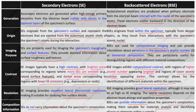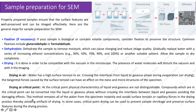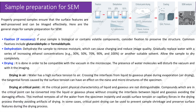Now let us discuss sample preparation for SEM. Properly prepared samples ensure that surface features are well preserved and can be imaged effectively. The first step is fixation, if necessary. If the sample is biological or contains volatile components, consider fixation to preserve the structure. Common fixatives include glutaraldehyde or formaldehyde.